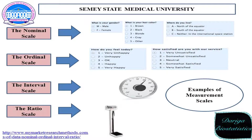Here are examples of variables or questions in a questionnaire. Nominal scale: 'What is your gender?' – male or female. 'What is your hair color?' – brown, black, blonde, gray, or other. You can code these options for doing statistics more easily, because people can make spelling mistakes. If options have codification, it will be more accurate.